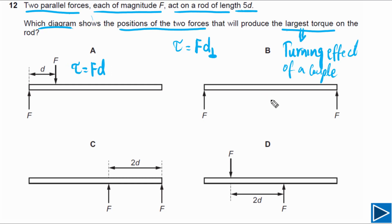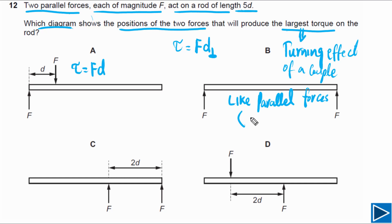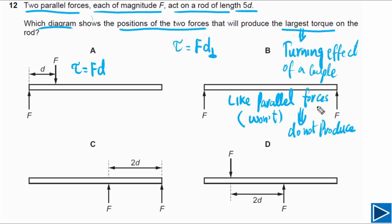For option B, the two forces are like parallel forces — parallel and in the same direction. Like parallel forces do not form a couple and do not produce torque. So the torque in this case is equal to zero.